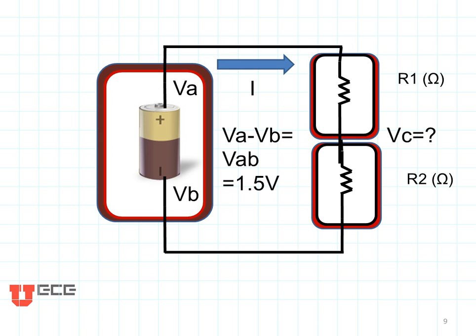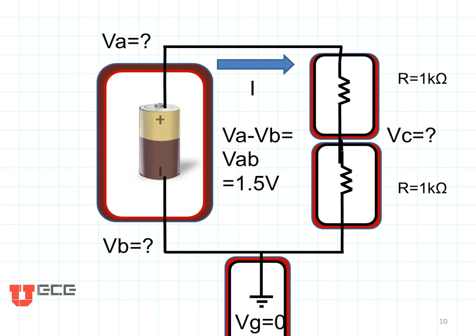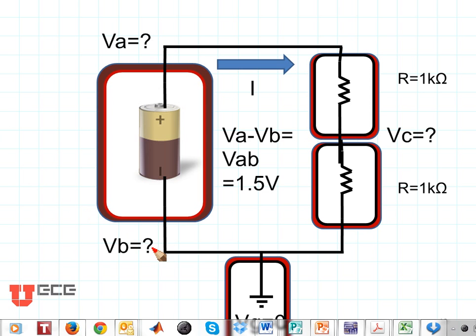Here's an example of a very simple circuit where we have a battery connected to two resistors, and we might be interested in knowing what VC is in between these two resistors. We know that VAB is 1.5 volts because it's a 1.5 volt battery. But without a ground, we can't tell exactly what VC is. So let's define the ground at a convenient place — the bottom of the battery. Then VB is directly connected to ground, so VB is 0 volts by definition. Since VA is 1.5 volts above VB, and VB is 0, VA is 1.5 volts.